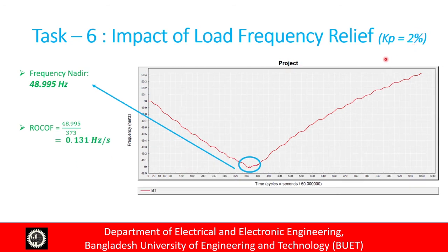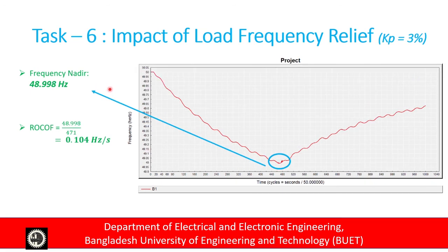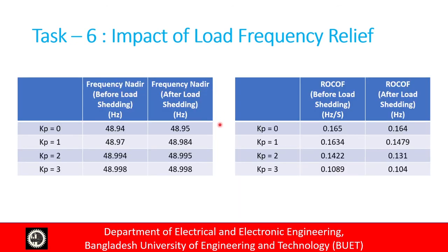For kp equal to 2%, the frequency nadir is 48.995 Hz and the RoCoF is 0.131 Hz/s. For kp equal to 3%, the frequency nadir is 48.998 Hz and the RoCoF is 0.104 Hz/s. We can see that as kp increases, both the frequency nadir and RoCoF improve. Comparing the system before and after load shedding, both frequency nadir and RoCoF values have improved after load shedding. That concludes the presentation for this project — thank you for your patience.